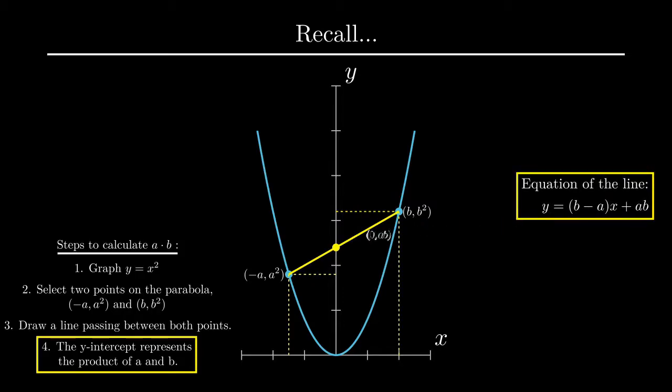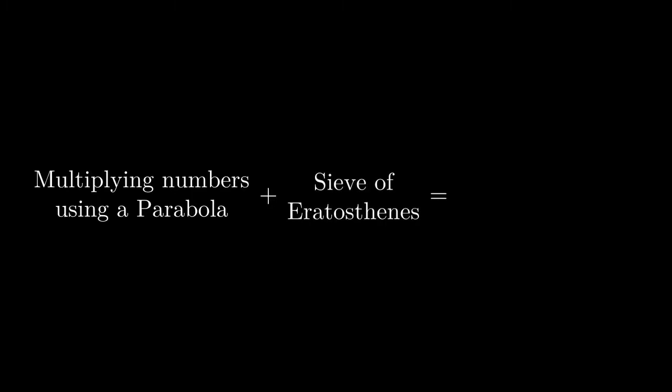We know this because of the standard equation we derived. If we combine our knowledge of how to multiply two numbers using a parabola with the method for finding primes using multiplication, we give birth to a new formula to find primes using a parabola. I encourage you to pause the video to think of what that would look like.